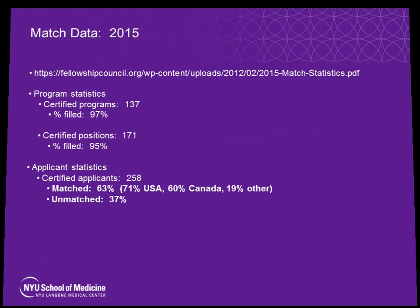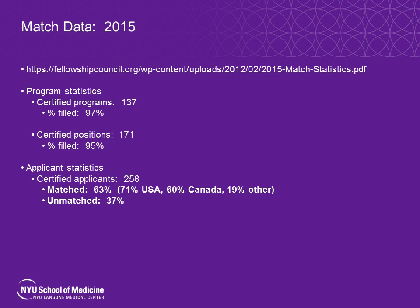To give everyone a sense of the match data, here is data from the Fellowship Council website for the 2015 application cycle for the Advanced GI MIS Bariatric Endoscopy Fellowships. 97% of programs were filled and 95% of all positions were filled. On the applicant side, however, only 63% of applicants successfully matched into a fellowship — meaning 37% of applicants did not match in 2015. These numbers are important to keep in mind as you go through the application cycle and to make sure you're maximizing your chances of matching.